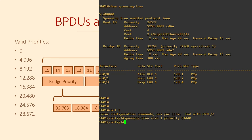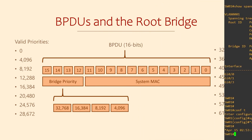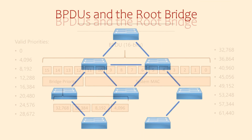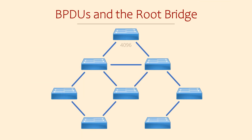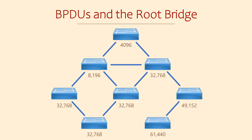The Bridge Priority and the switch MAC address make the switch ID. This is one of the pieces of information that switches share with each other when they start sending and receiving BPDUs. It's good to get to know your neighbour, but there's a little more to it than that.